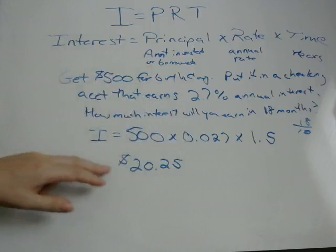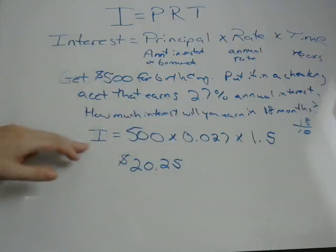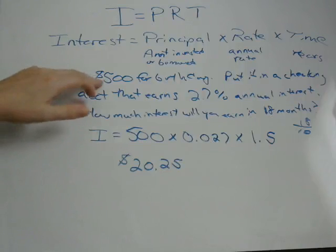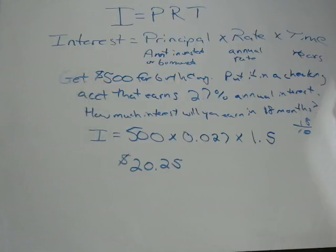The answer is $20.25 — that's how much interest you earn after that time period. So the total amount of money you'll have is $500 plus $20.25, which equals $520.25.